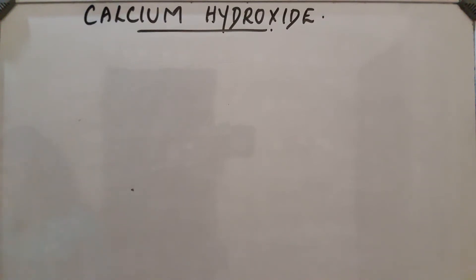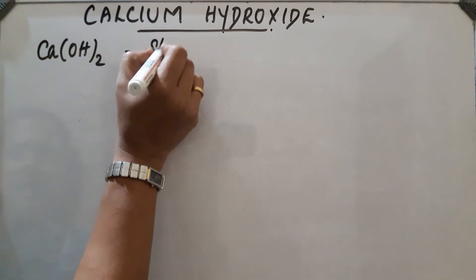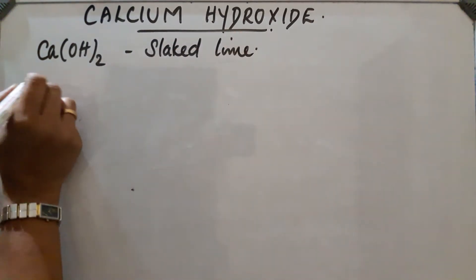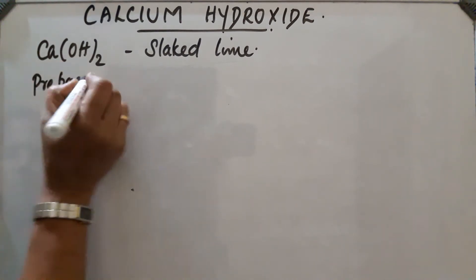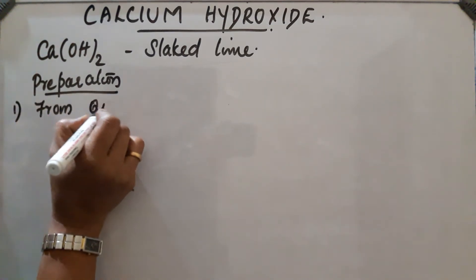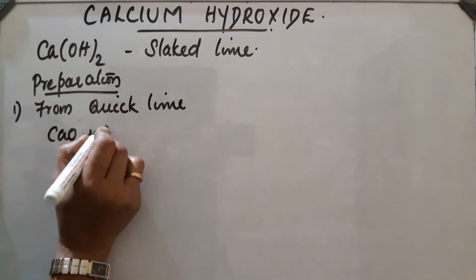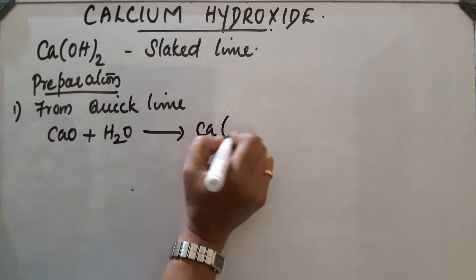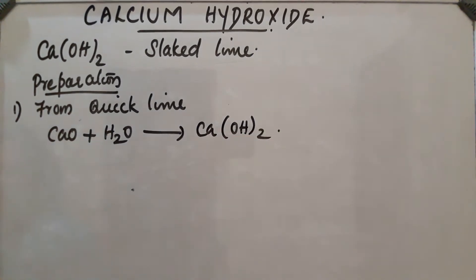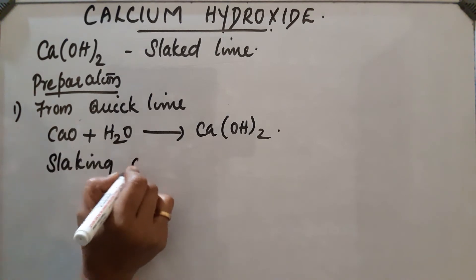Calcium hydroxide, chemical formula CaOH₂, is also called slaked lime or liquid lime. It can be prepared from quicklime (CaO) by reacting it with water to obtain calcium hydroxide. During this process, a large amount of heat is produced, and this process is known as the slaking of lime.